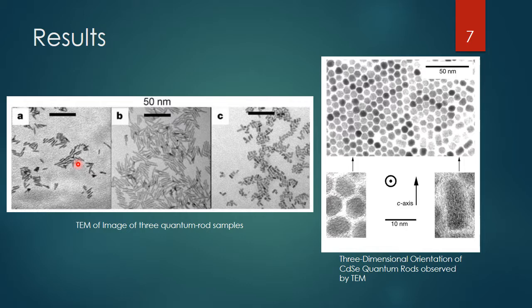Comparing A and B, or even B and C, you can see they were able to get very different sizes in the quantum rods they were synthesizing. In C you're getting maybe five to six nanometer rods, compared to the ones in B where they're getting maybe 15 to 20 nanometers. So they were able to get a pretty big difference in the C-axis length they could synthesize.